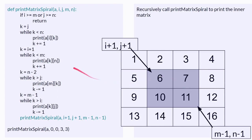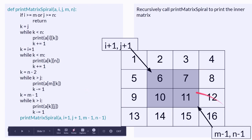And at the beginning, when you first call it, you pass in 0 for I, 0 for J, 3 for N, and 3 for M if you have a 4 by 4 matrix.